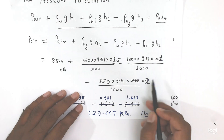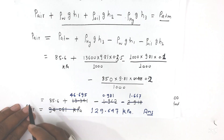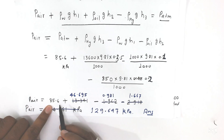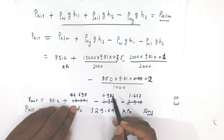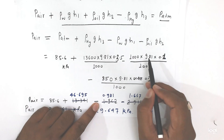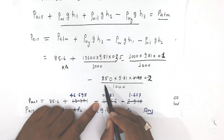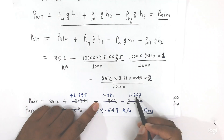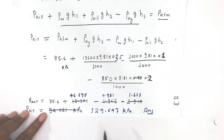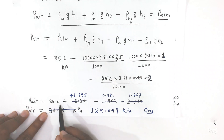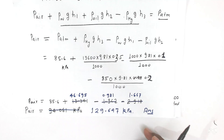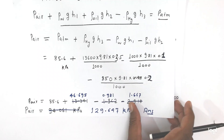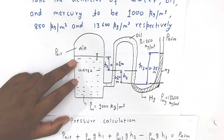So the whole value comes in kilo Pascal. P_air equals 85.6 plus 46.695 minus 0.981 minus 1.667, which gives us 129.647 kilo Pascal. So this is the answer. Like this we calculate the arrangement.